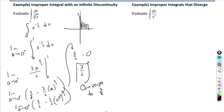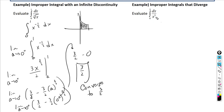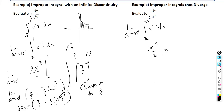The integral converges to 3/2. Now example two: the integral from 0 to 3 of dx over x³, rewritten as x to the negative 3. This graph looks similar — there's a vertical asymptote at x = 0, the lower bound. So we write the limit as a approaches 0 from the right of the integral from a to 3 of x^(-3) dx.